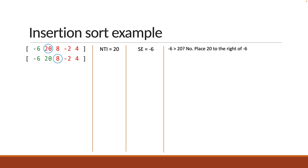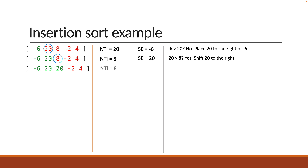Next, we pick 8 which is from the unsorted part of the array. Let's store 8 as number to insert. We compare it with the sorted elements. First, we start at 20. Is 20 greater than 8? Yes, so shift 20 one position to the right. We now have 20 twice, but that is okay as 8 is stored in the variable number to insert and we haven't lost track of it. The next sorted element is minus 6. Is minus 6 greater than 8? No. So place 8 one position to the right of minus 6. Our sorted part of the array is now minus 6, 8 and 20.